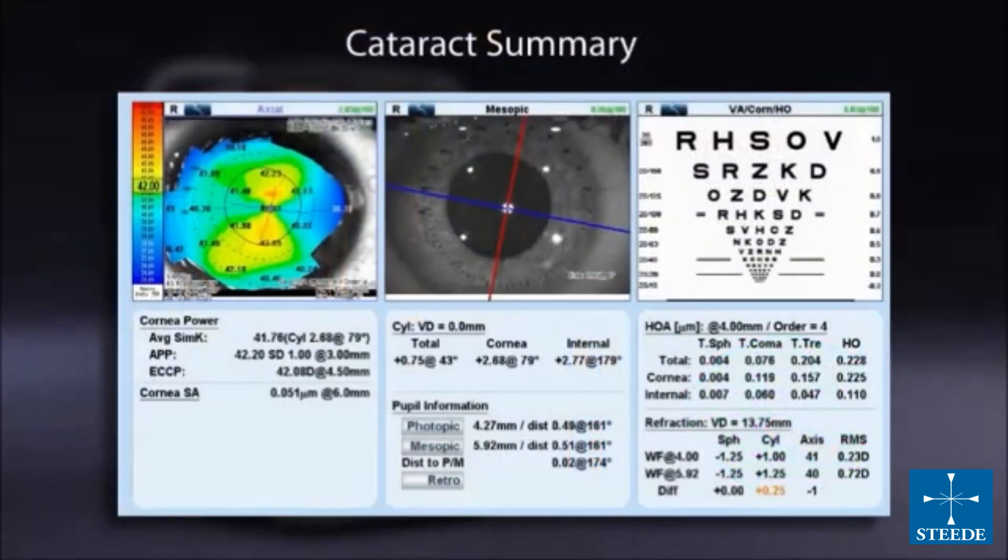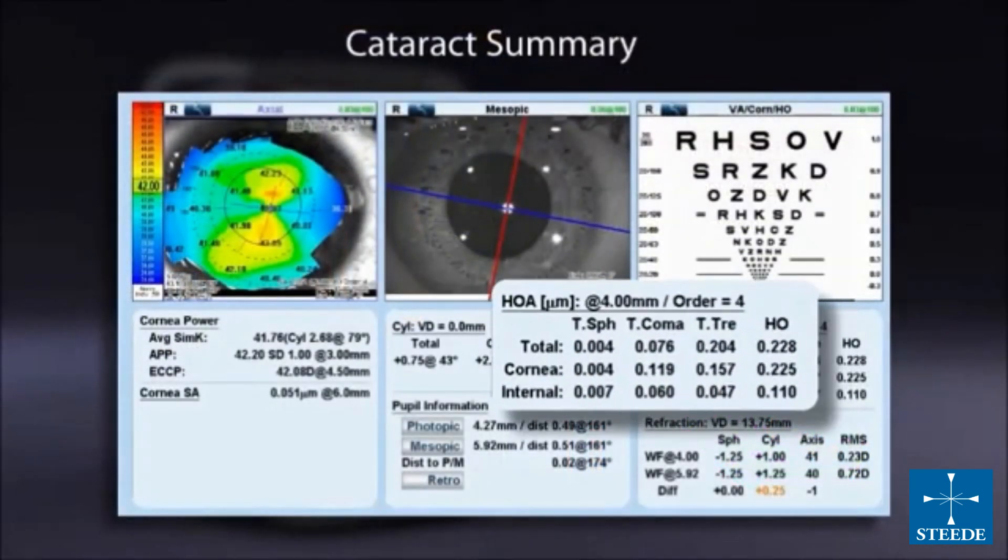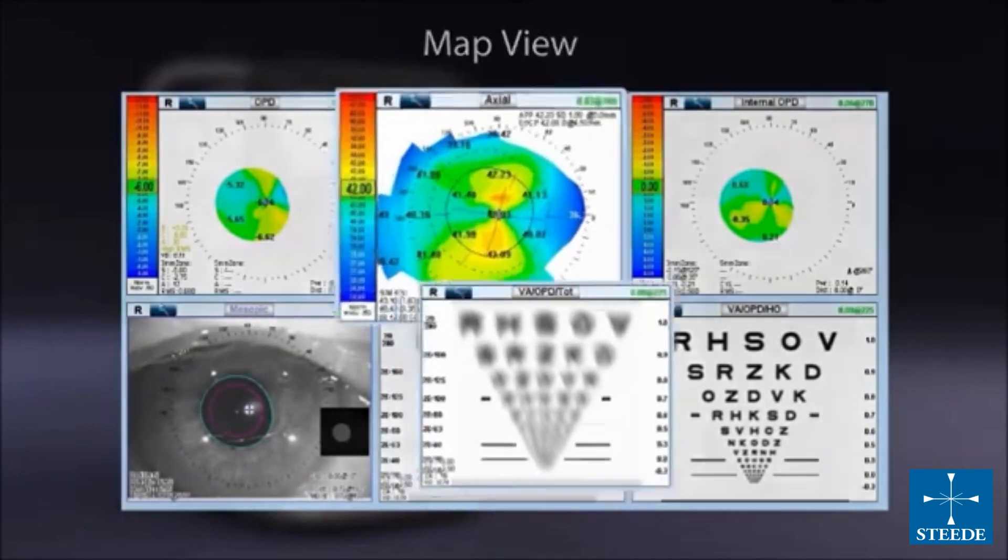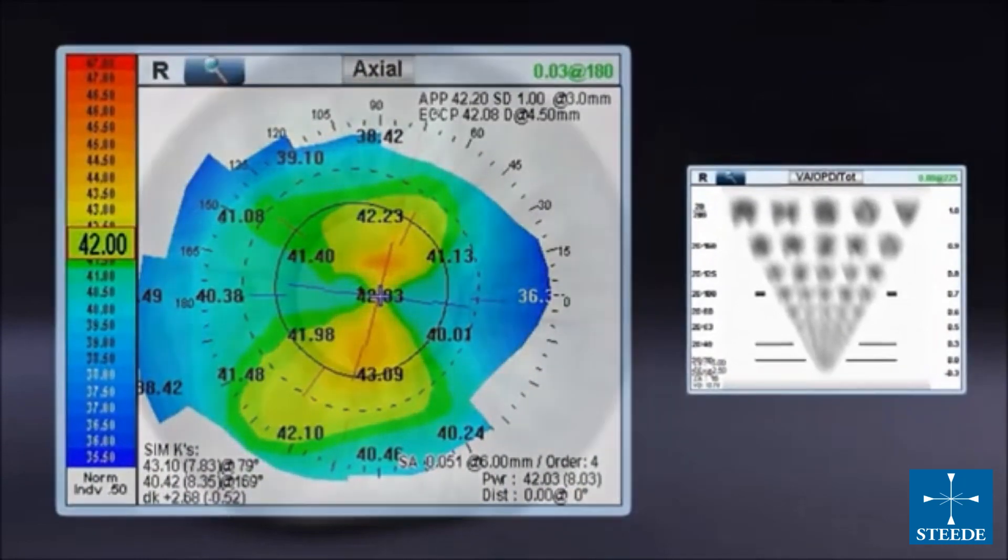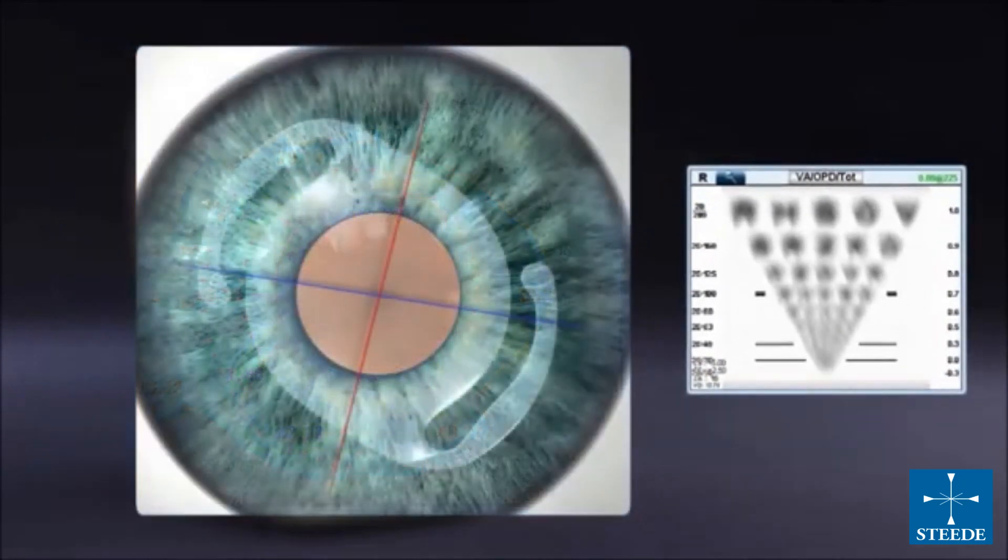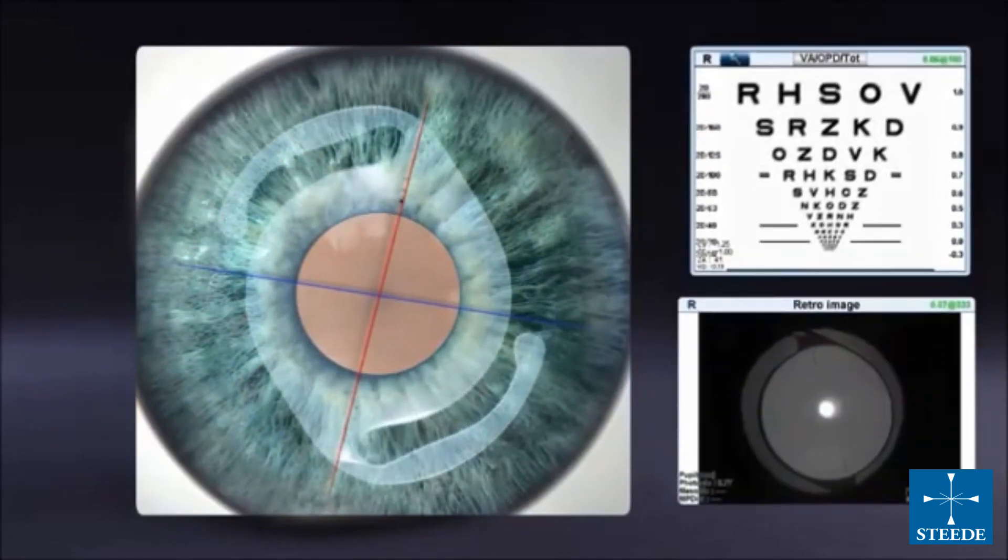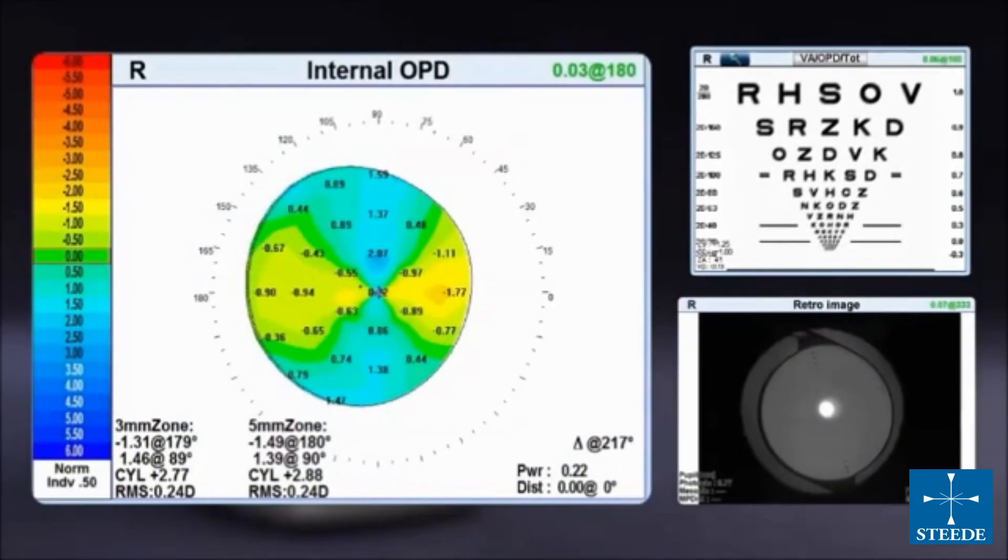Cataract summary displays any high-order aberrations that may remain after the cataract is extracted. Map view shows pre-op measurement with the ability to display the post-op measurements showing the correction along with the markings of the toric IOL in the retroillumination image, and lens placement with the internal OPD map.